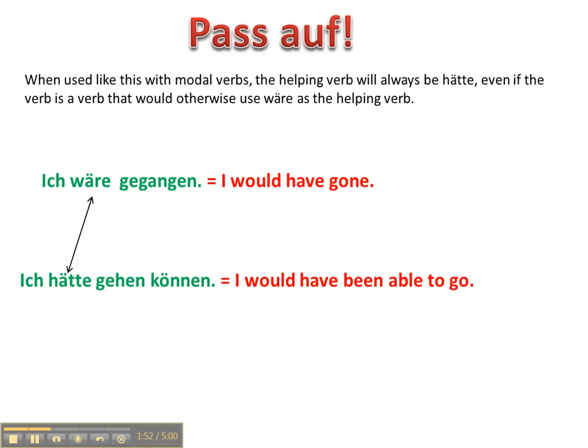So the wäre basically goes away. Instead of saying, for example, 'ich wäre gegangen,' you say 'ich hätte gehen können' — even though you're still using gehen, you're using hätte as the helping verb.